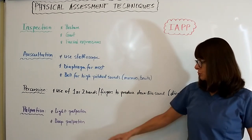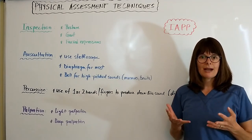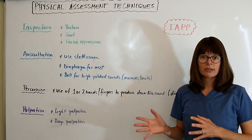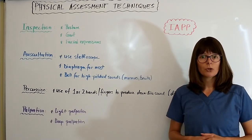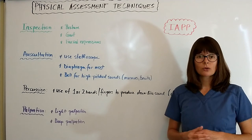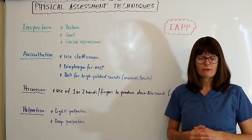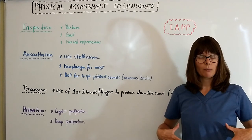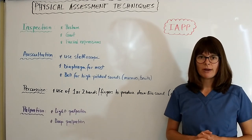The last assessment technique is Palpation. We always want to do light palpation before deep palpation, using our tactile senses to assess for normal findings or any abnormalities. Be sure to always ask the patient for permission first and tell them what you're going to do so they are aware. If there are tender areas — for example, if the patient complains of abdominal pain or just had surgery — stay away from those areas with deep palpation, and always palpate the tender area last to avoid unnecessary discomfort.